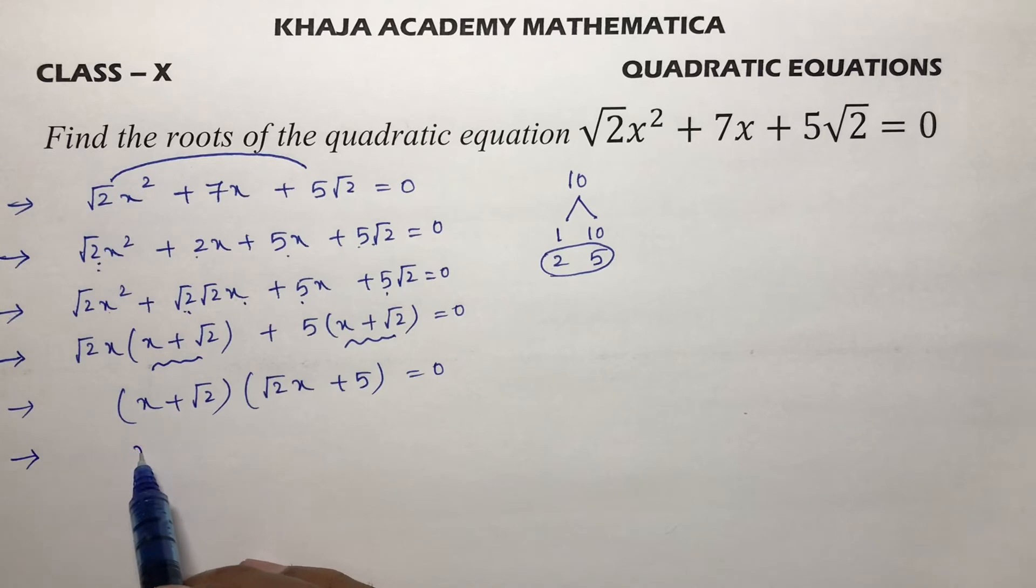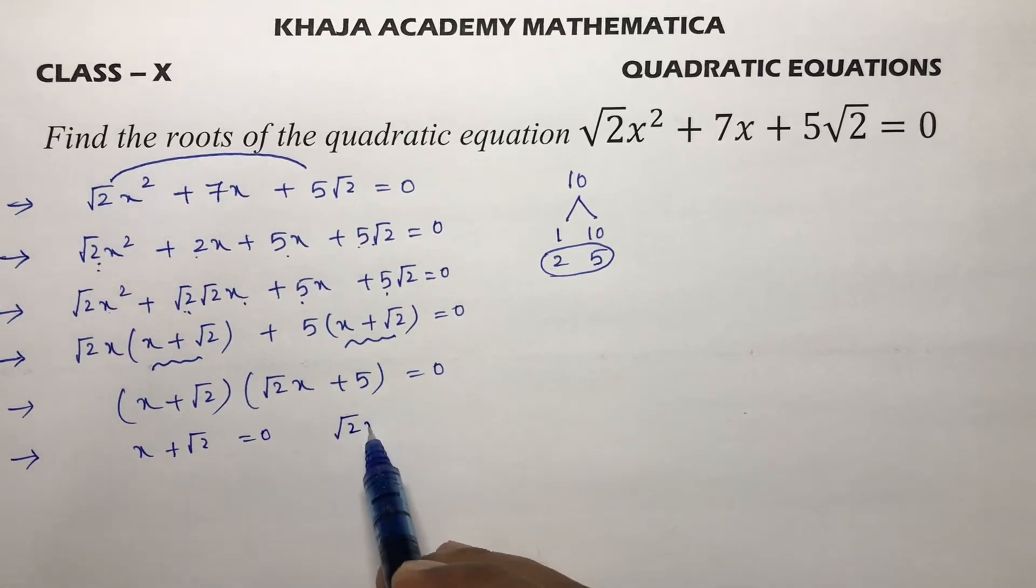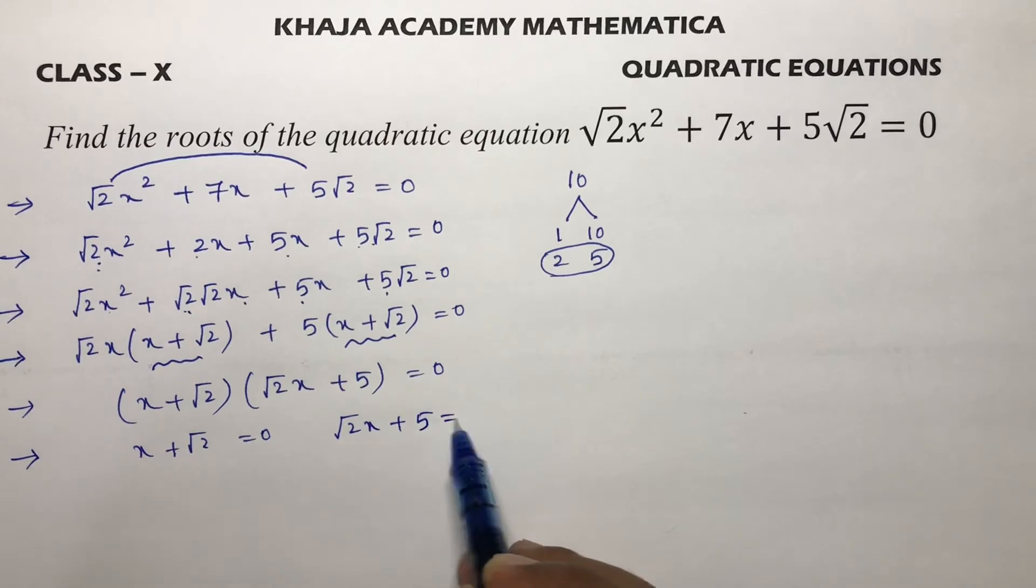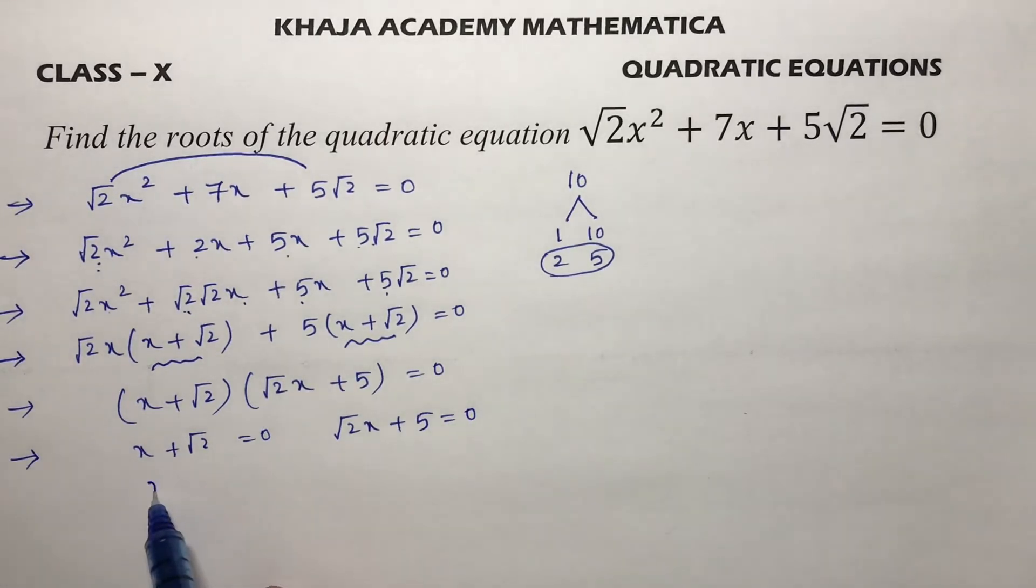Next, here x + √2 = 0, √2x + 5 = 0. x = -√2, √2x = -5, so x = -5/√2. You can rationalize this part.